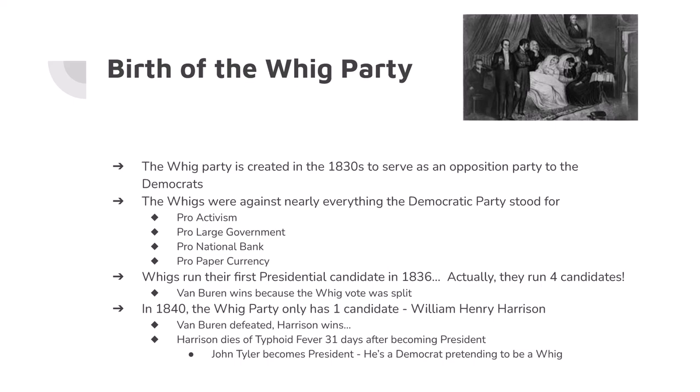The dislike for Andrew Jackson leads to the birth of a new political party called the Whig Party — the leftovers of the Jeffersonian Republicans. It's a group of people who are anti-Freemason, since Jackson was a Freemason, and it's a party directly opposed to everything Jackson stood for. Andrew Jackson preferred small government — they want big government. Jackson opposed reforms — they're pro-activist. Jackson favored state banks having power — they want a national bank. It's essentially the anti-Andrew Jackson party.